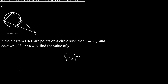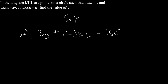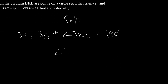Let's begin with the solution for question 3a. We know that the sum of opposite angles of a cyclic quadrilateral is equal to 180 degrees. So we can say that 3y plus the opposite angle, which is angle JKL, is equal to 180 degrees. Therefore, angle JKL is equal to 180 minus 3y.